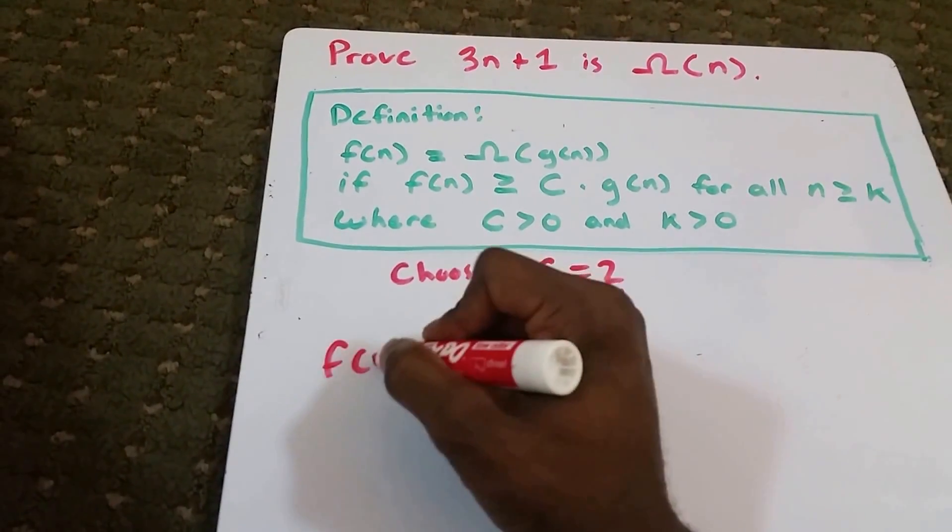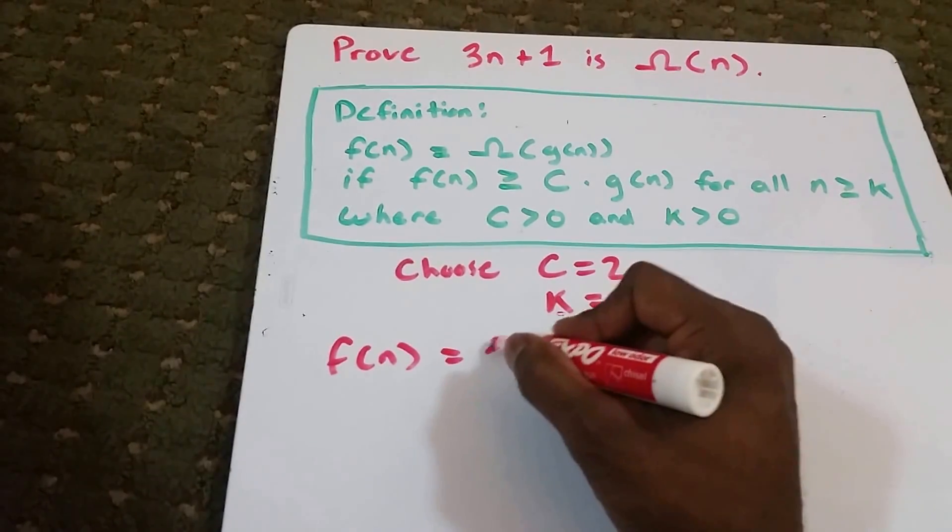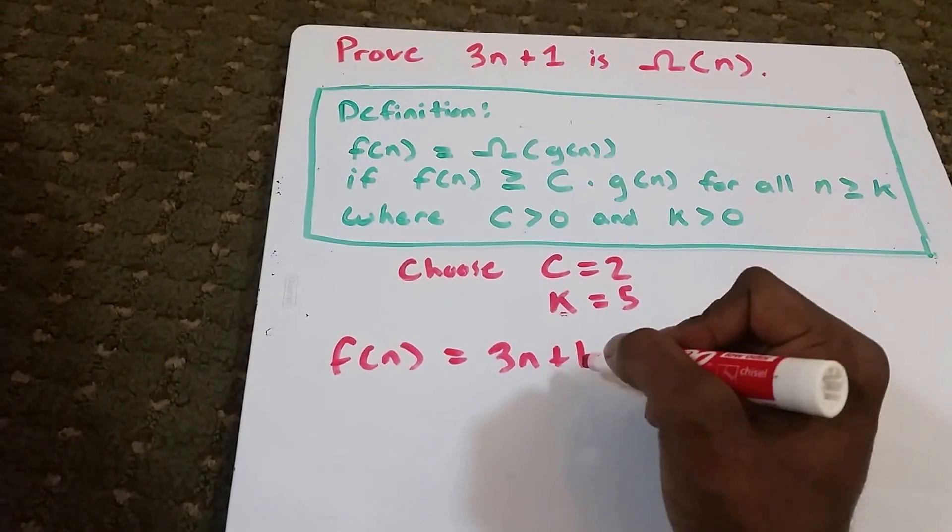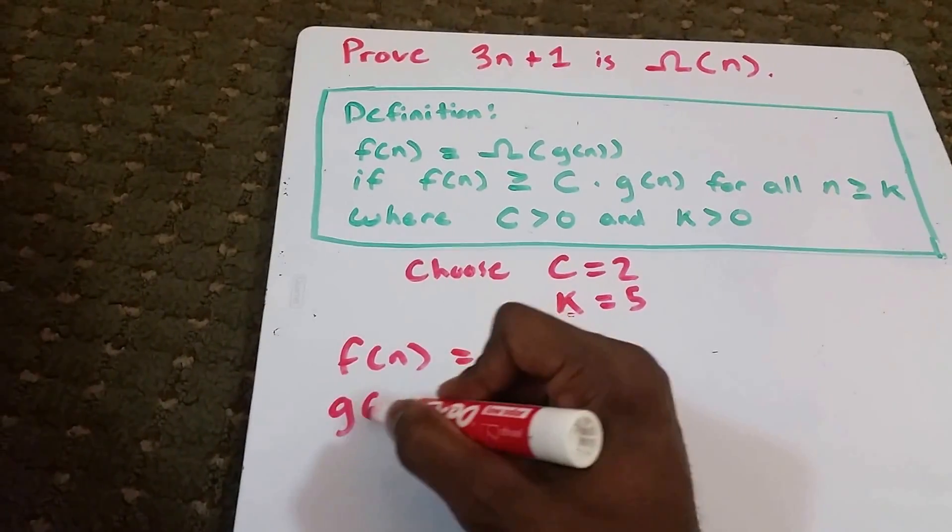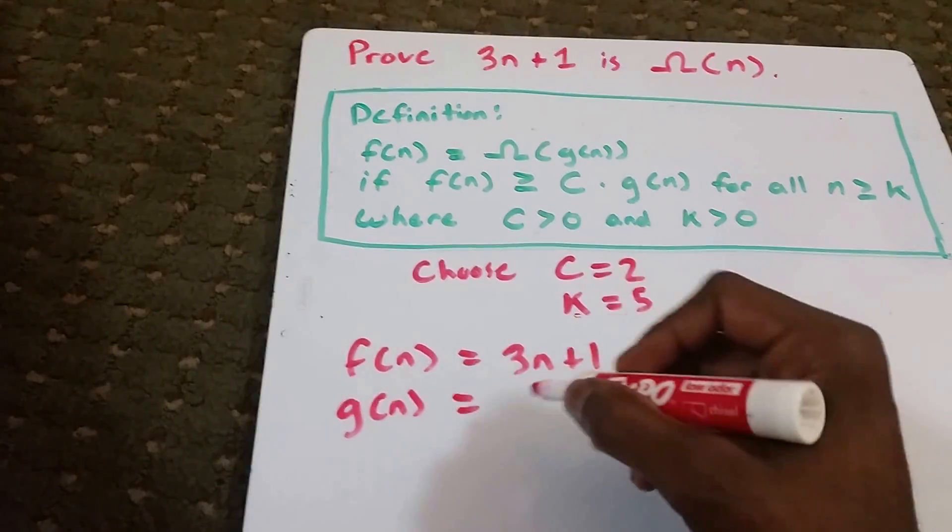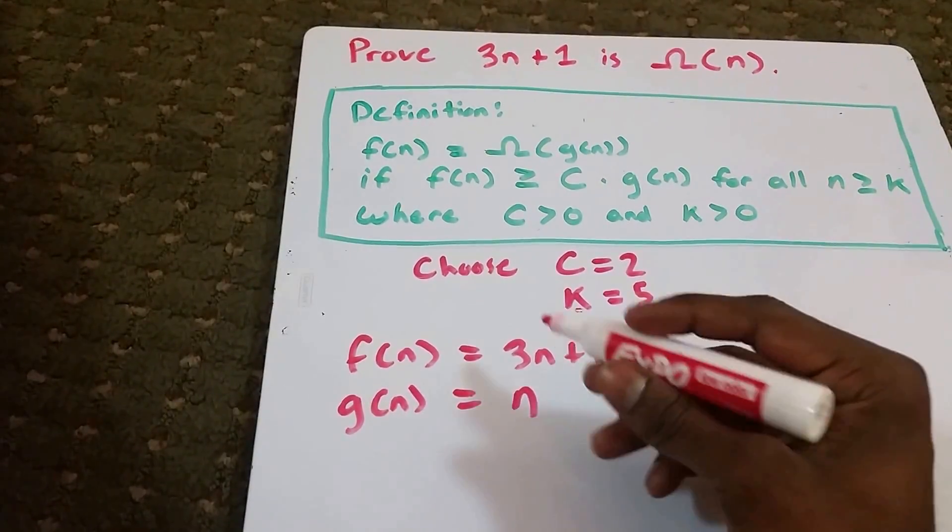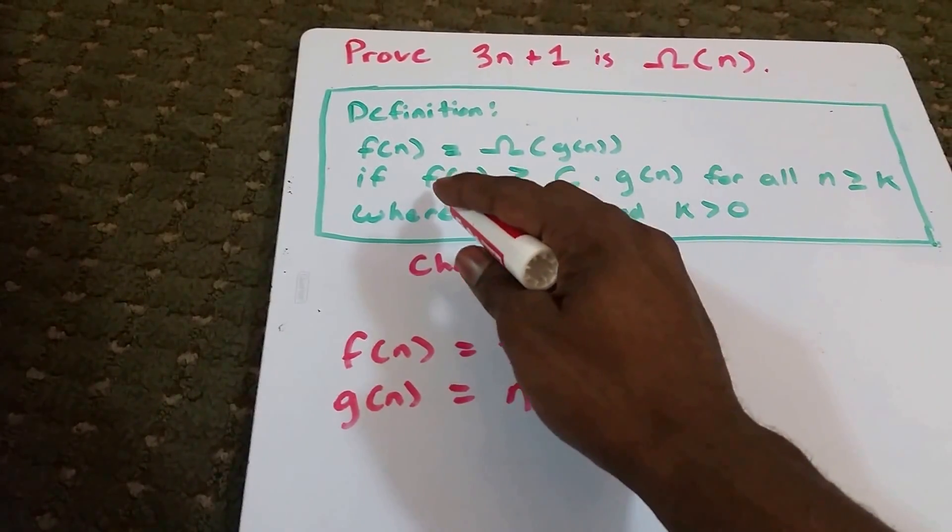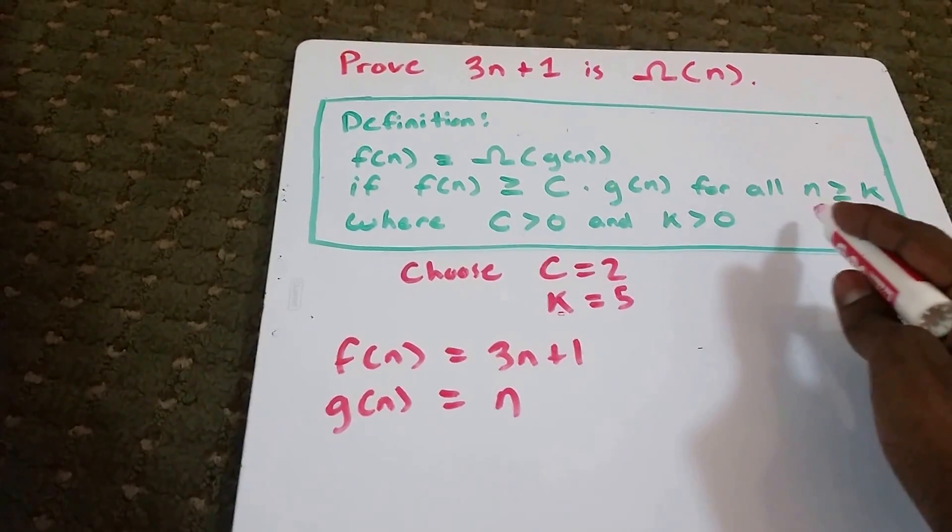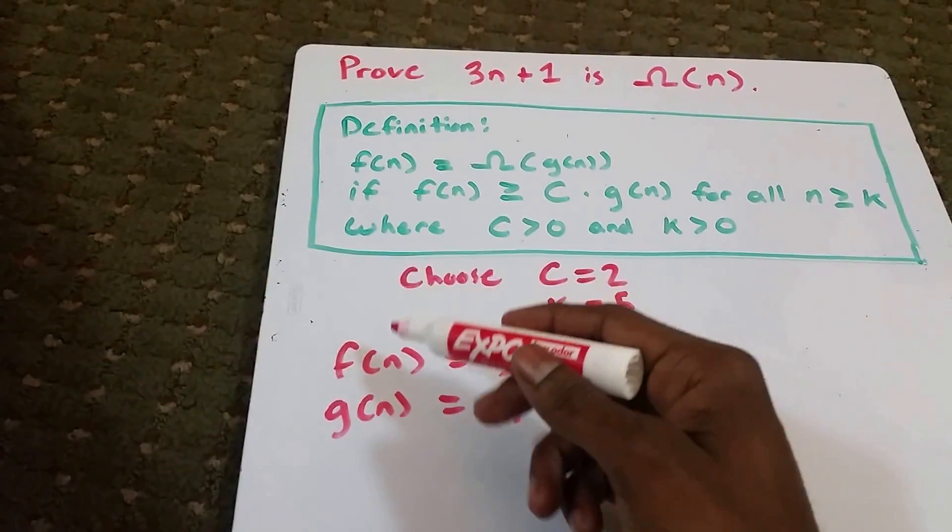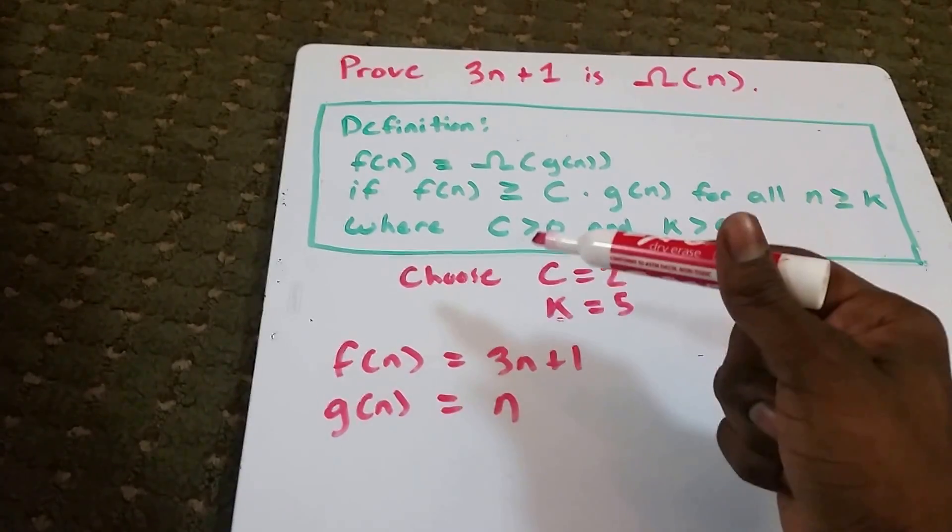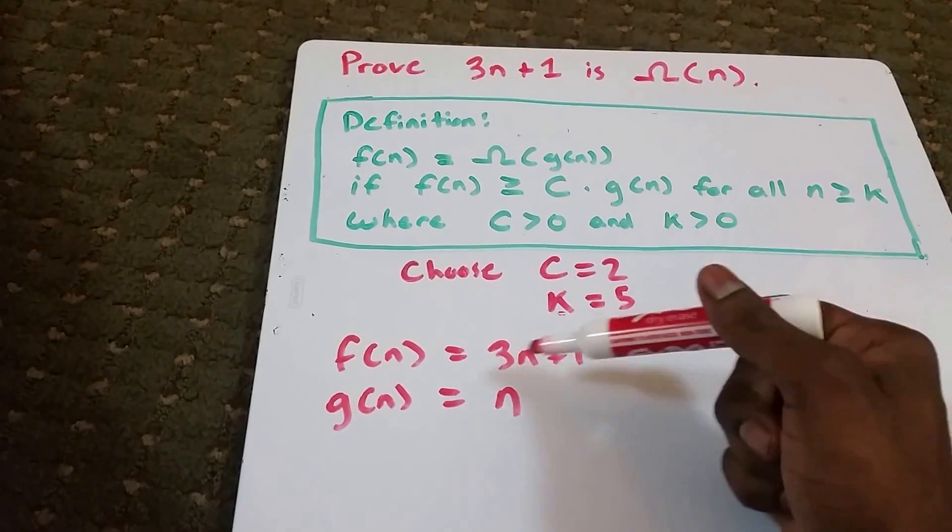Our f of n is equal to 3n plus 1, and our g of n is equal to n. We want to use this equation here, and we're just going to substitute the f of n, g of n, C, and K for these values here.